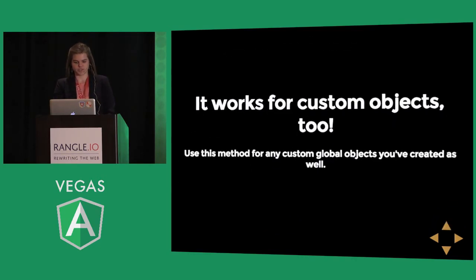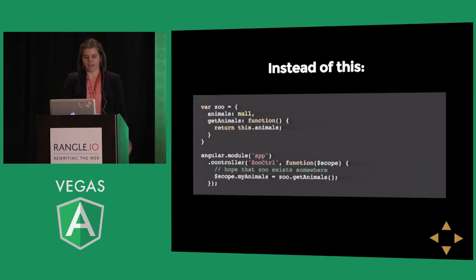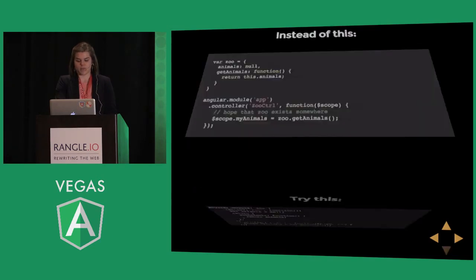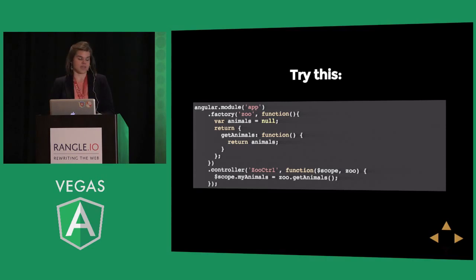And you can do this for custom objects too. When people aren't familiar with Angular and don't have a lot of services, they start creating global objects that controllers refer to. Something like a controller for a zoo with a zoo object that gets and stores animals — but there's nothing safeguarding that, nothing making sure that zoo exists before you try to call zoo.getAnimals in the controller. So instead, we do the same thing and wrap it in a service or factory, depending on your current needs. Now we can inject that the same way we injected moment, and we know it's there in the controller. And again, it's more testable because now we can mock it out.